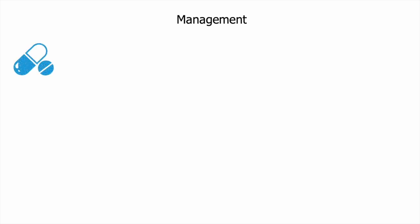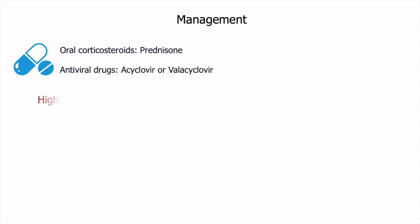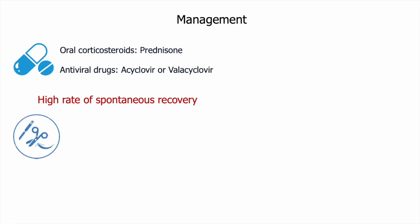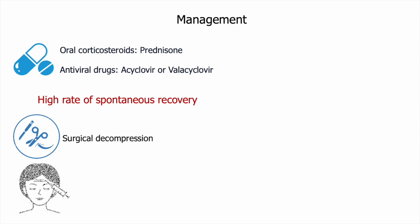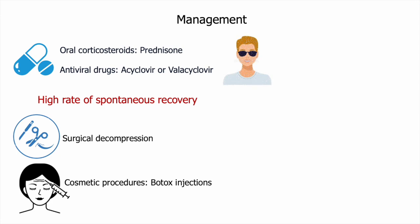Regarding treatment, oral corticosteroids have traditionally been prescribed to reduce facial nerve inflammation in Bell's palsy. Prednisone is typically prescribed in a 10-day tapering course starting at 60 mg daily. Because of the possible role of HSV-1 (herpes simplex virus 1) in the etiology of Bell's palsy, antiviral drugs acyclovir and valacyclovir have been studied. Either acyclovir 400 mg five times daily for seven days, or valacyclovir 1 gram three times daily for seven days may be given, depending on the doctor's discretion; however, data are insufficient to fully support this.